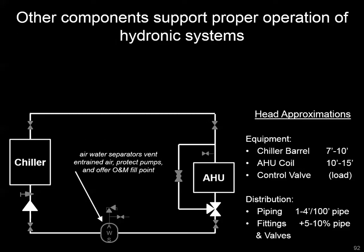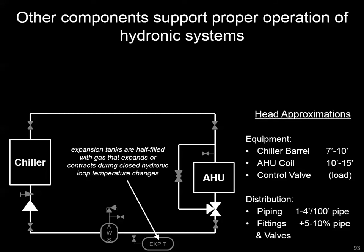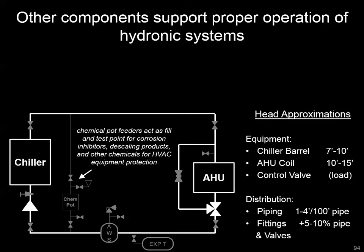There are other components in the hydronic system. An air-water separator helps remove entrained air, protects pumps and other equipment, and acts as a water makeup point. Expansion tanks accommodate density changes in the water as temperature changes — an air bladder in the tank allows for expansion and contraction of the system. You'll typically have in the plant a chemical pot feeder, which is a point to test and add chemicals like corrosion inhibitors and scale treatments. That's usually a very thin bypass that should be valved off when not in use, but opened up when circulating chemicals through the system.